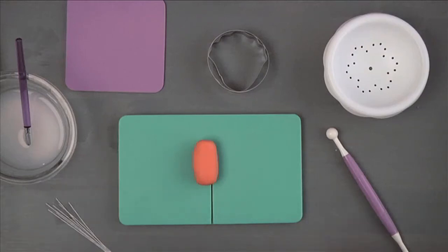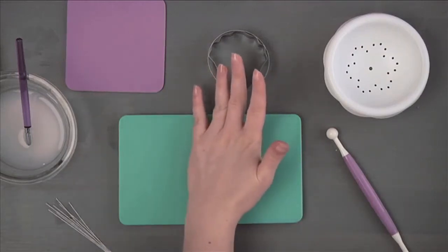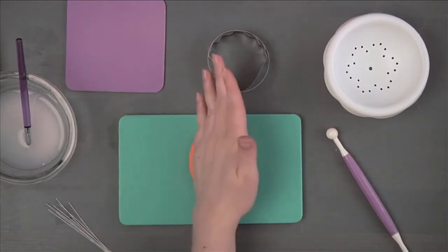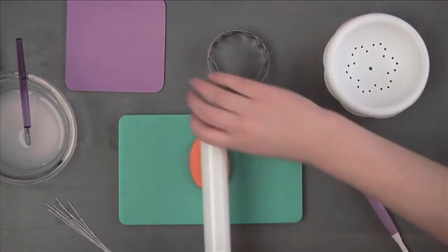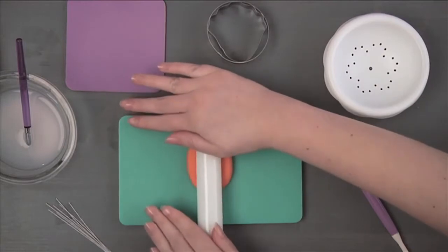Shape a 1 1/2 inch ball of red gum paste into a log about 2 inches long. Roll to less than 1/16th of an inch thick over the groove of a cornstarch dusted impression mat, forming a ridge.